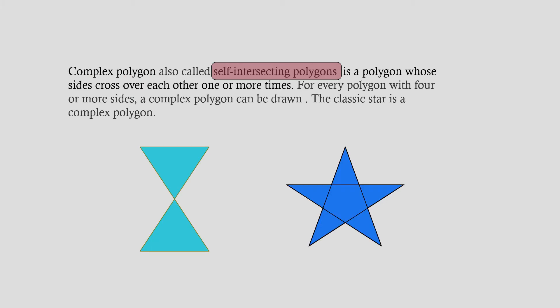Complex polygon, also called self-intersecting polygons, is a polygon whose sides cross over each other one or more times.